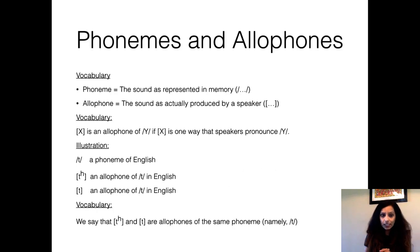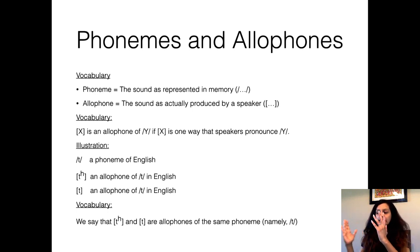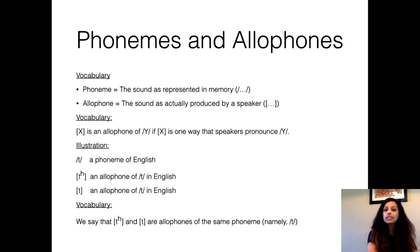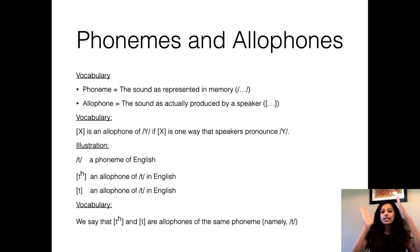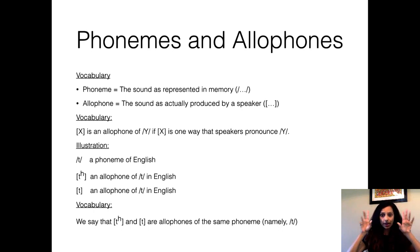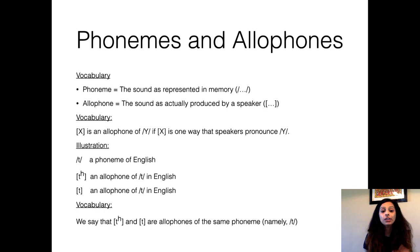The analogy is that a phoneme is the sound as represented in the speaker's memory, and the allophone is a sound as actually produced by the speaker. We use two different notations: a phoneme is always written in slanted brackets (/ /), and an allophone is always written in square brackets ([ ]). I'm going to illustrate this with the alveolar voiceless phoneme /t/ in English.